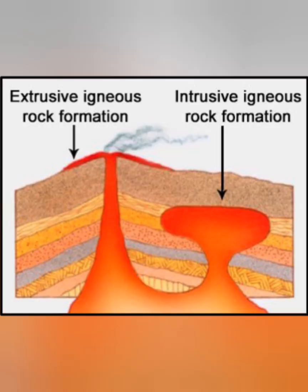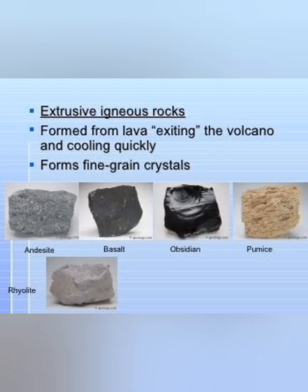Based upon their origin, or how the igneous rock is formed, we can divide them into two different types: extrusive igneous rocks and intrusive igneous rocks. Extrusive igneous rocks are volcanic rocks which are formed on the surface of the earth. When volcanic eruption takes place, the molten lava settles on the surface and cools down, forming small crystals.